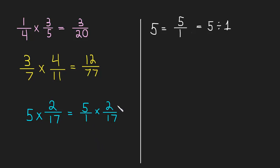And now we know how to do this. 5 times 2 is 10, and 1 times 17 is 17. So 5 times 2 over 17 is 10 over 17.